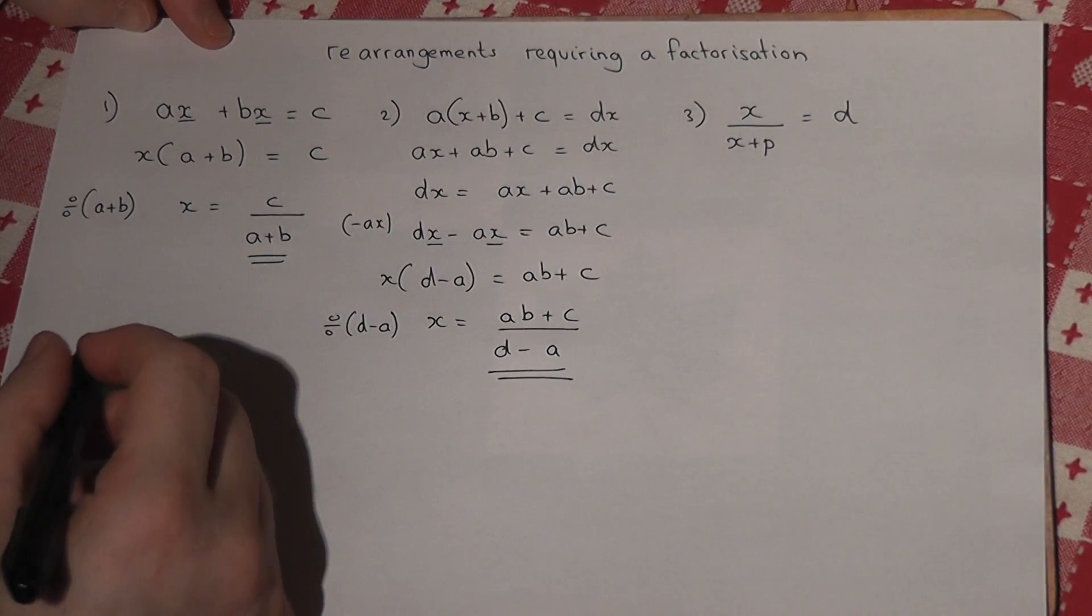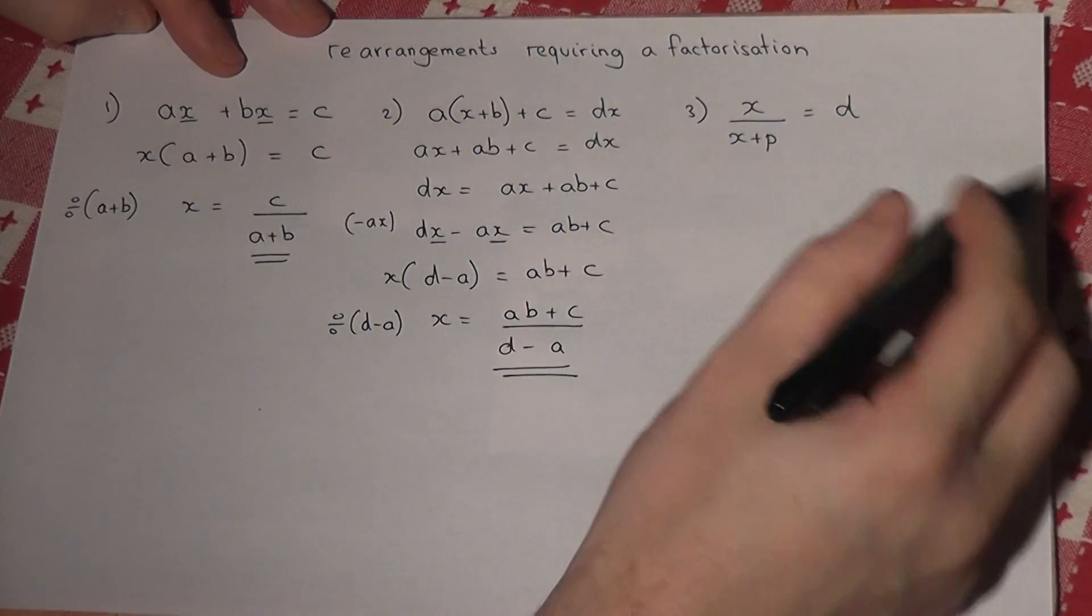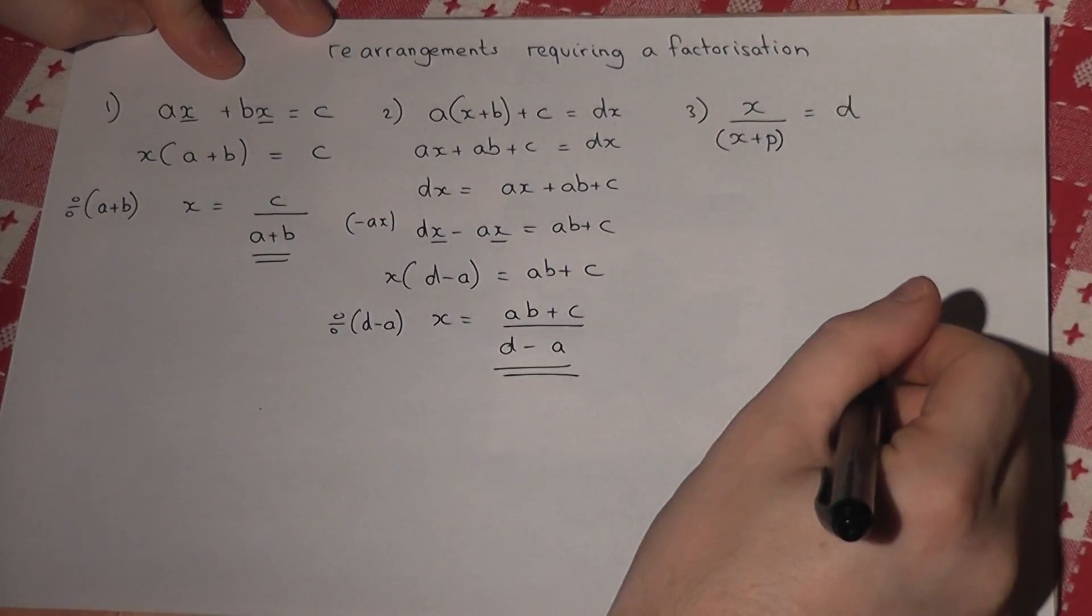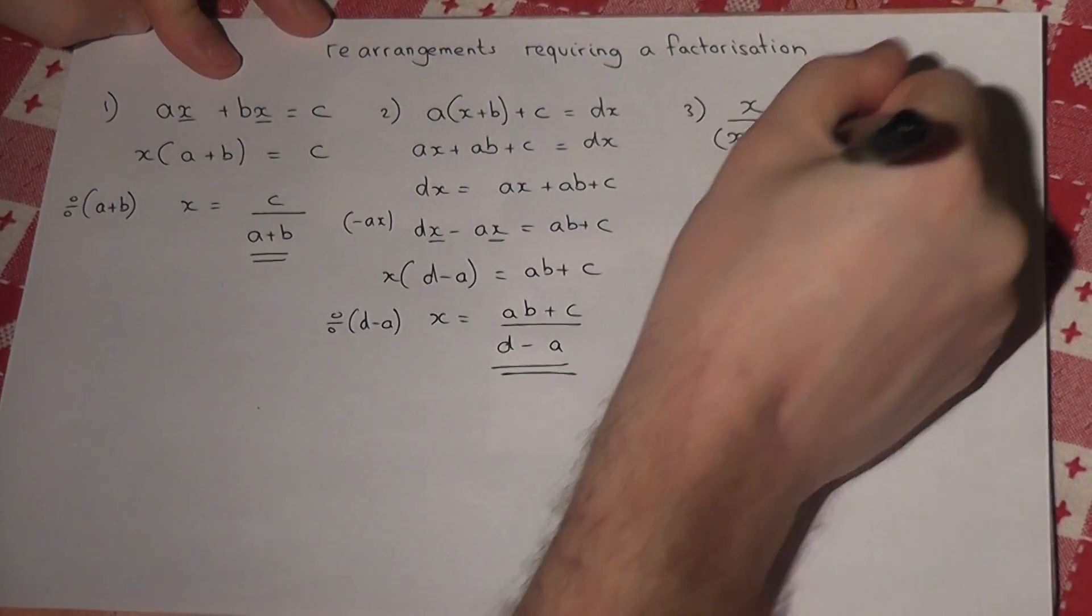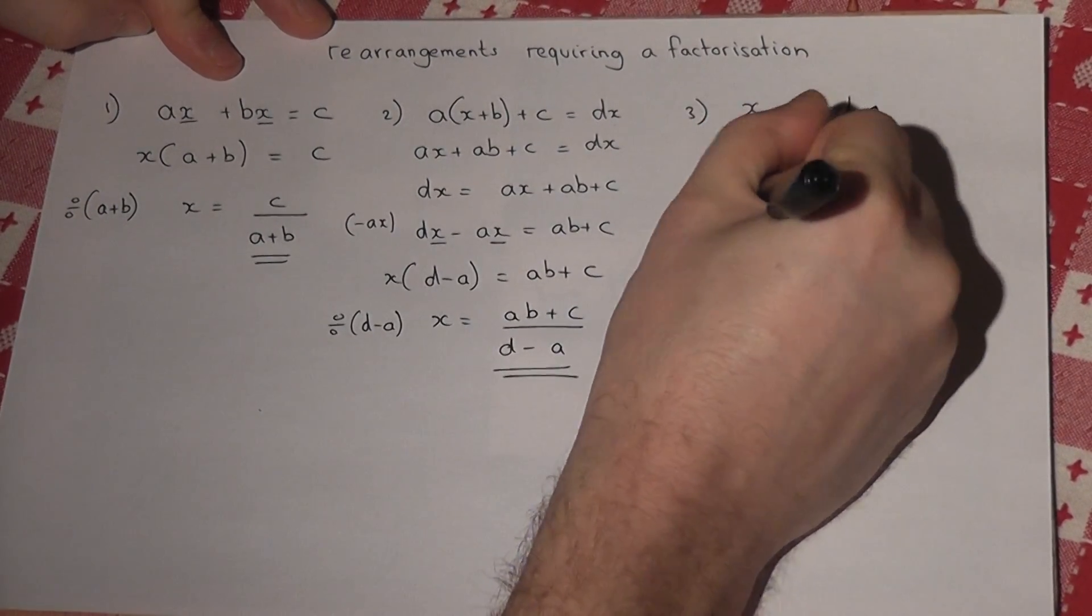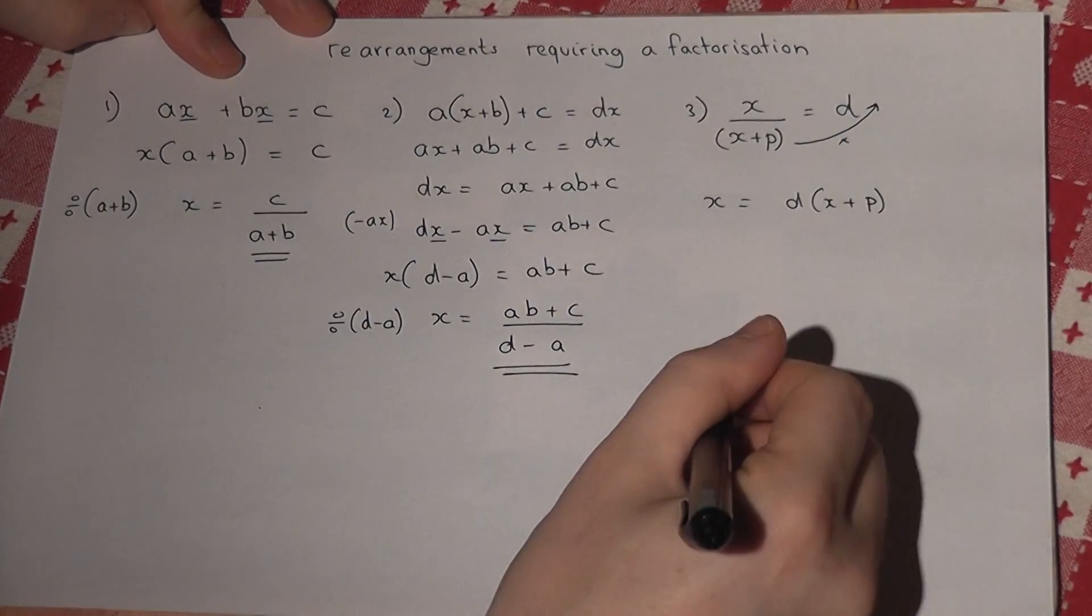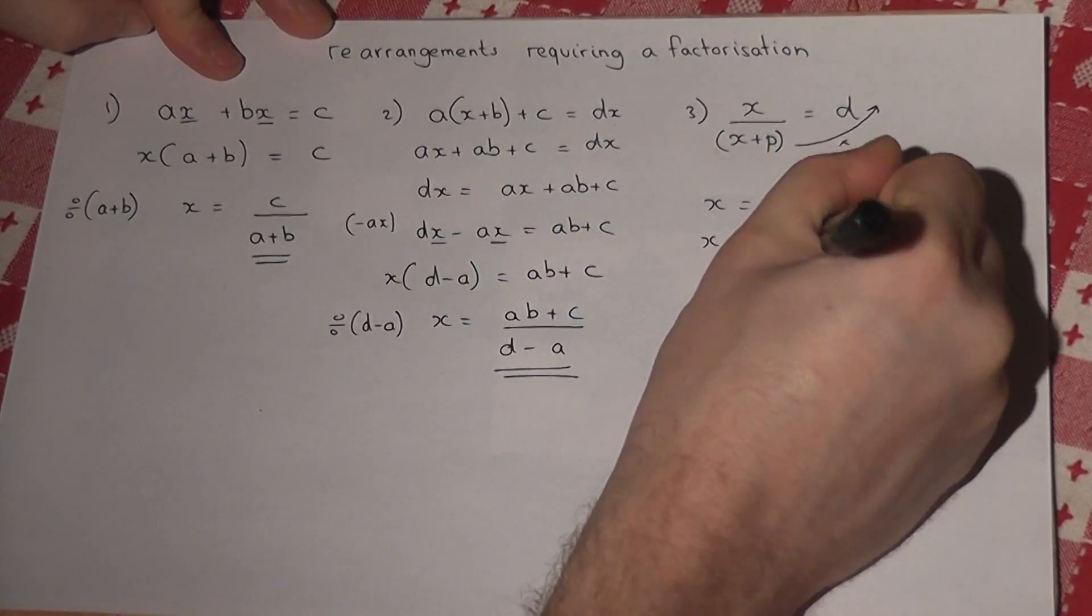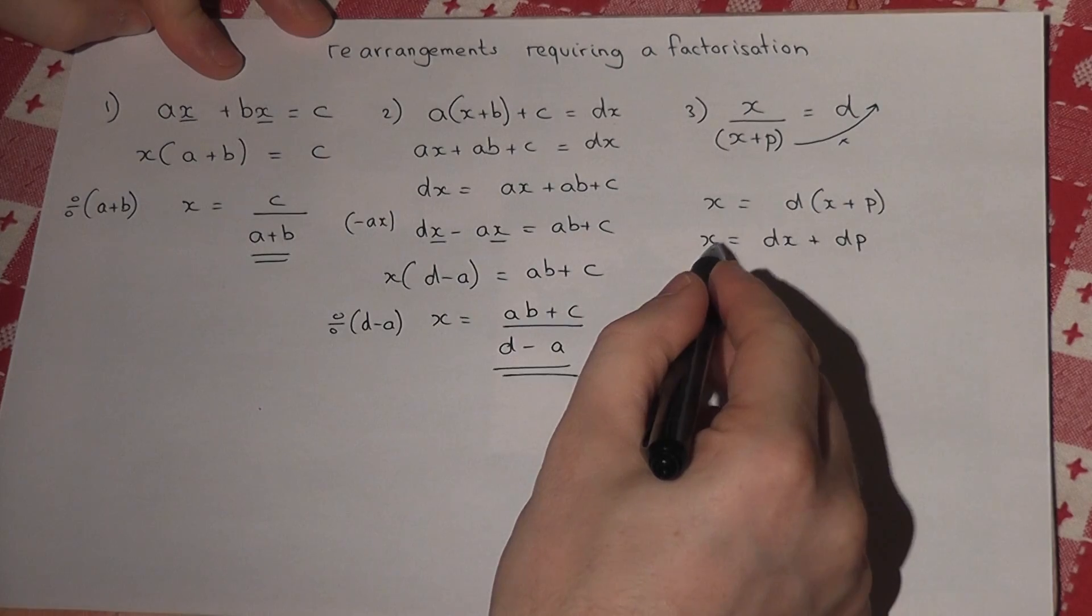The third example is a fraction. I begin by putting brackets under the fraction and then multiply by the denominator, so x = d(x + p). Expand: x = dx + dp, and then subtract the dx.